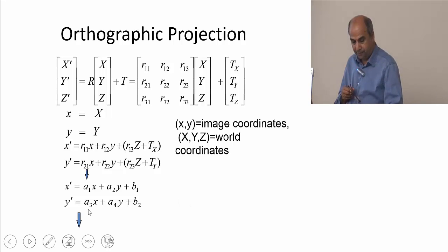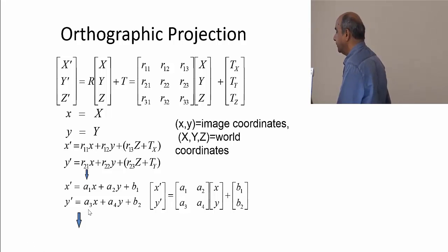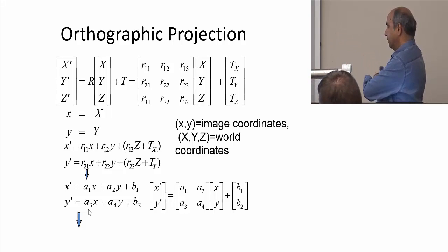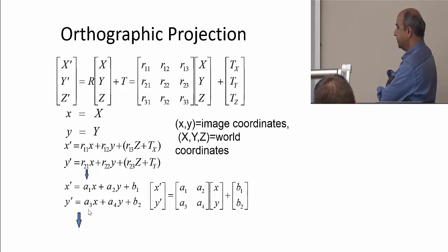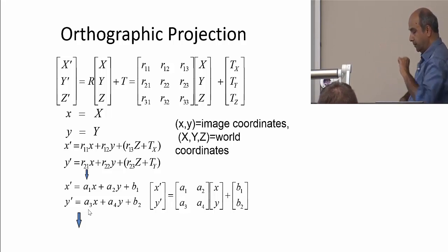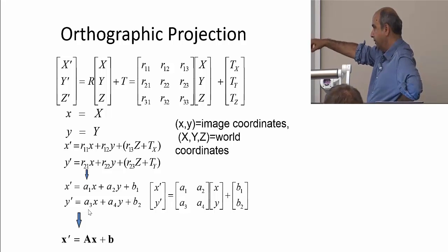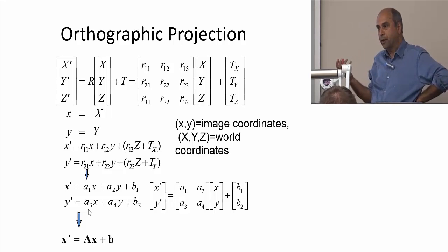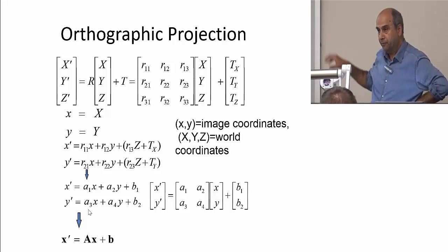Affine transformation relates point (x, y) in frame 1 to point (x', y') in frame 2 via x' = A*x + b, where A is a 2x2 matrix and b is a 2D translation vector. This has six unknowns: four from the matrix, two from the translation. This is a simple model under orthographic projection and rigid motion.